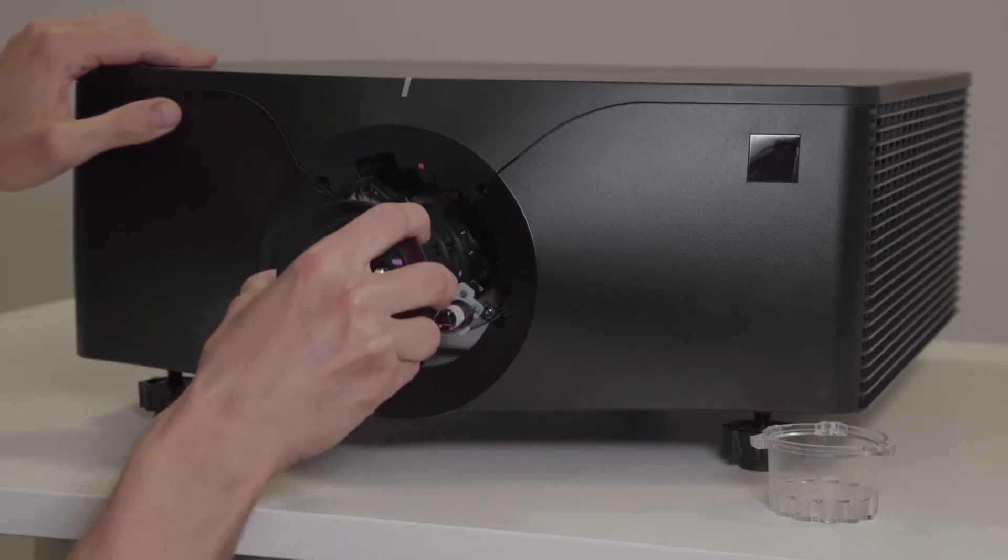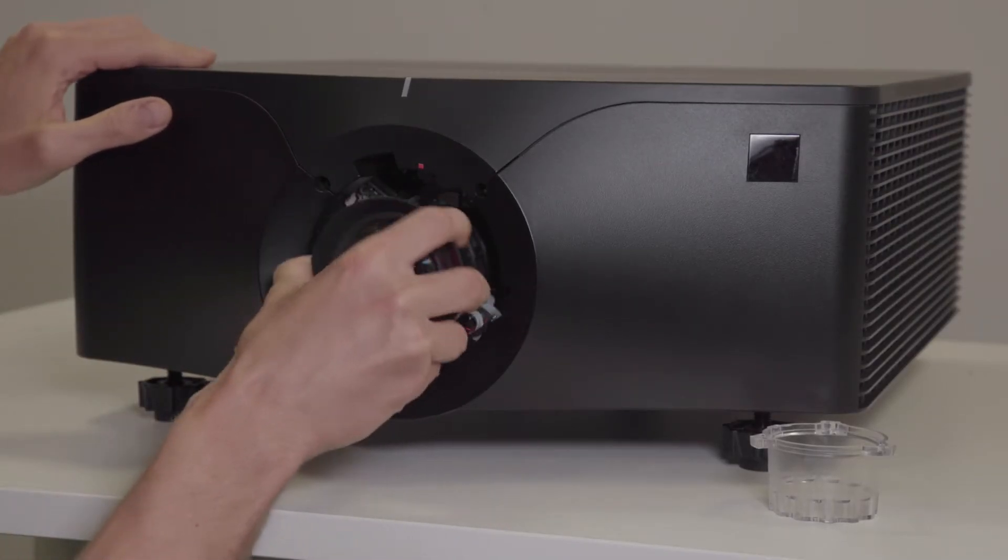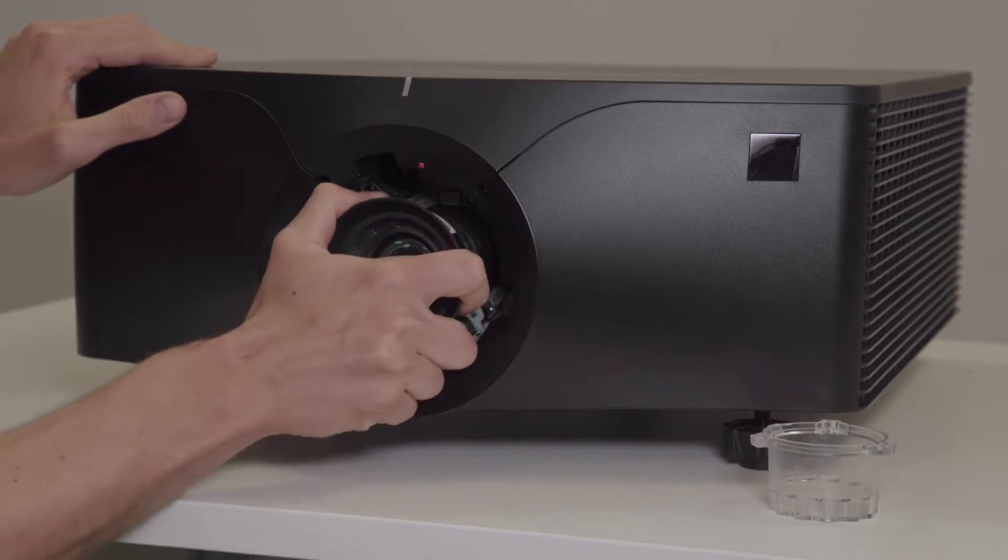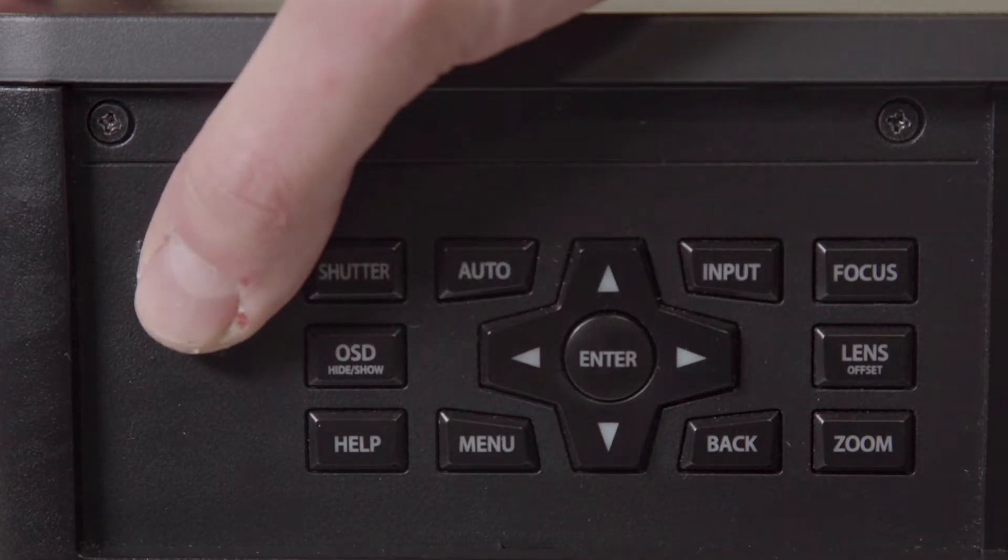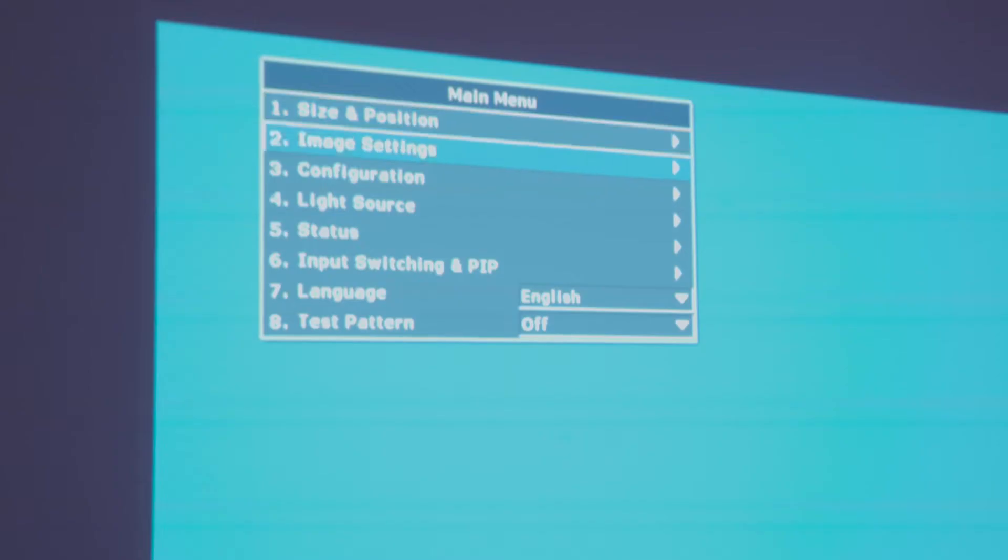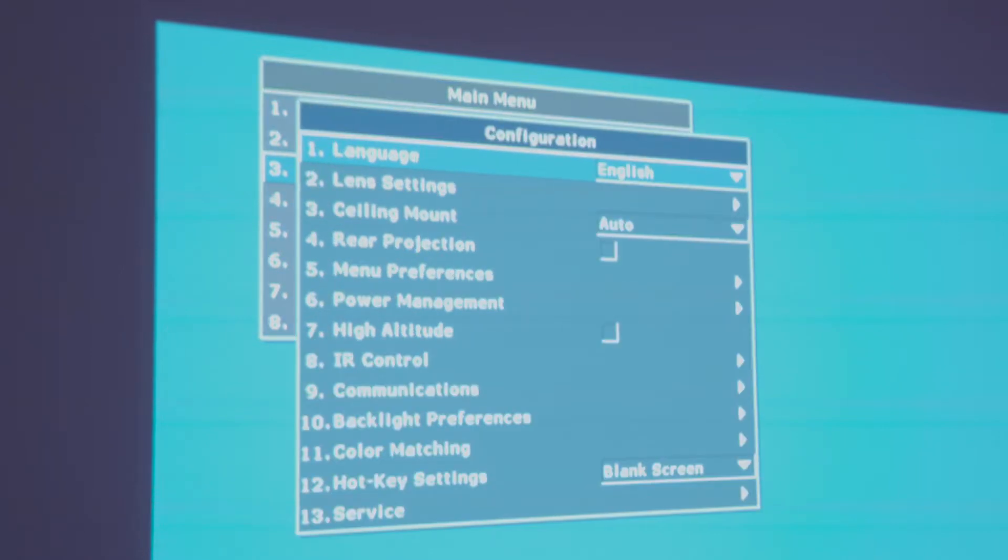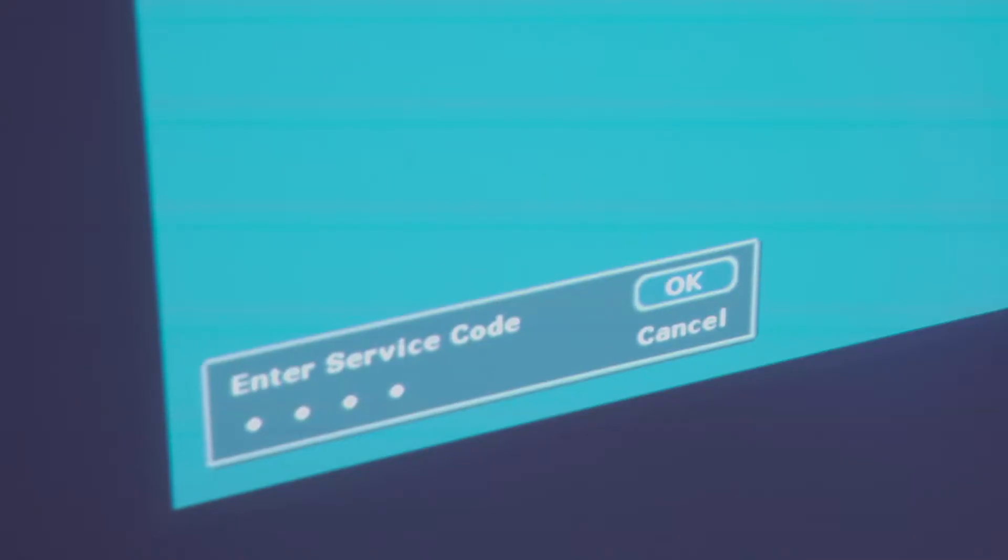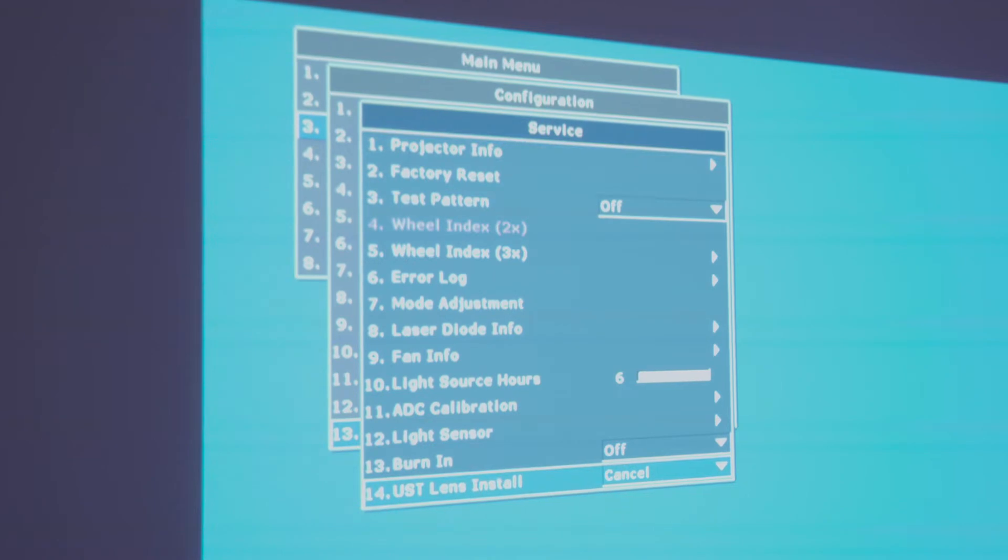To begin the installation you need to change the lens mode by first installing a non-UST lens. Once fitted power on the projector and navigate to configuration then service. From here select UST lens install and choose confirm.